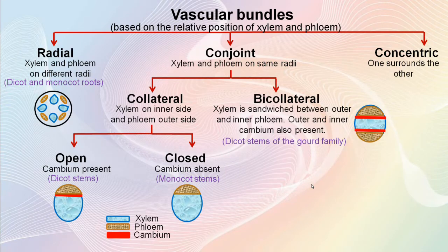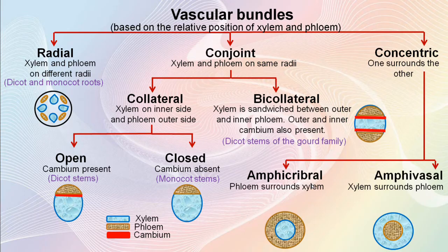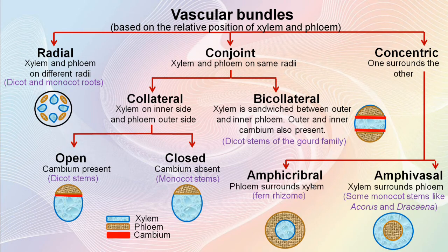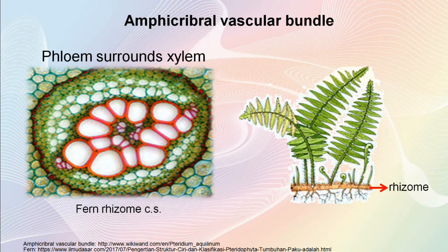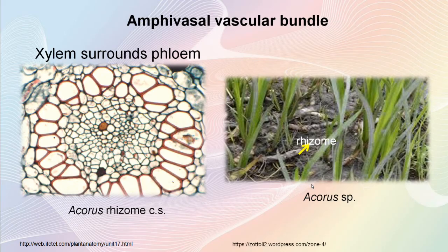Now let's check out what concentric vascular bundles are. In this type of vascular bundle, either phloem surrounds xylem or xylem surrounds phloem, which means there are two kinds of concentric vascular bundles. The concentric vascular bundle in which phloem surrounds xylem is called amphicribal, and the one in which xylem surrounds phloem is called amphivasal. Amphicribal vascular bundles are seen in the rhizomes — that is, underground stems — of ferns. Amphivasal type vascular bundles are seen in some monocot stems like Acorus and Dracaena. In a cross section of a fern rhizome, you can see the amphicribal type where phloem surrounds xylem. In Acorus rhizome, the amphivasal vascular bundle shows xylem surrounding phloem.